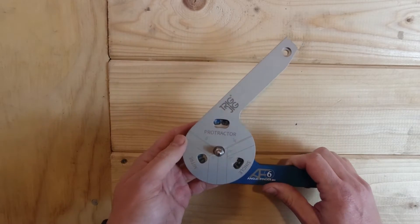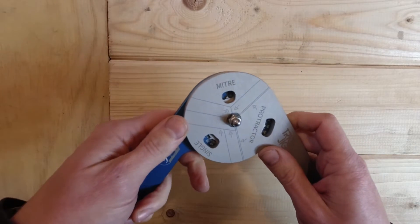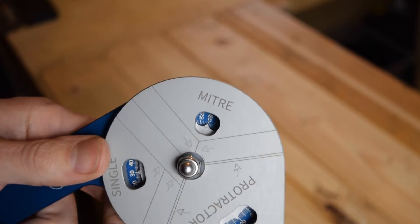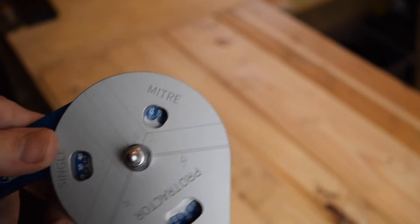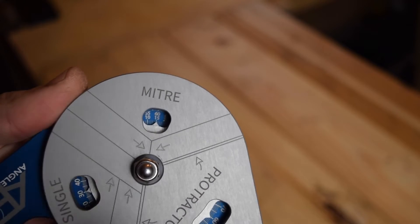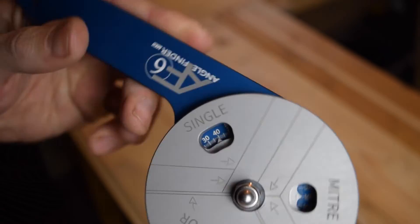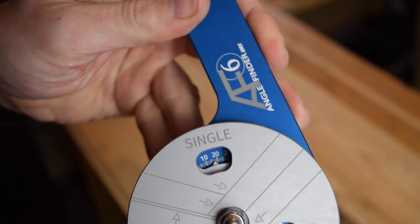A great feature of the AF6 is the double scale in the mitre and single display windows. Most mitre saws have a limited range of adjustment, usually around 45 degrees, which makes cutting more acute angles really difficult. The angle finder allows mitre saws to cut beyond 45 degrees when used in conjunction with a 45 degree cut block of wood.